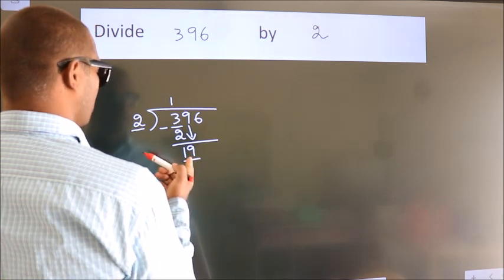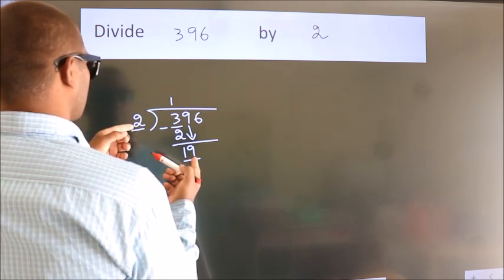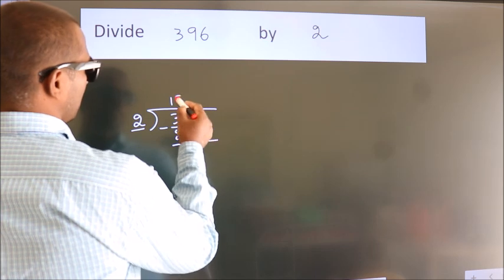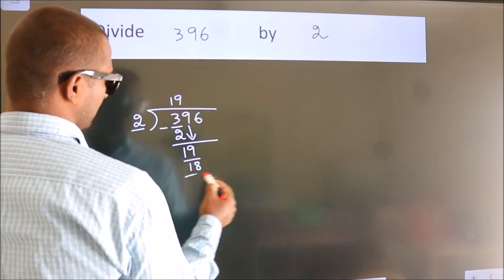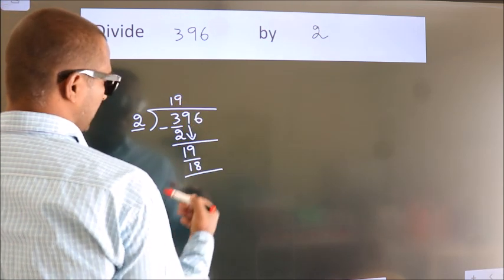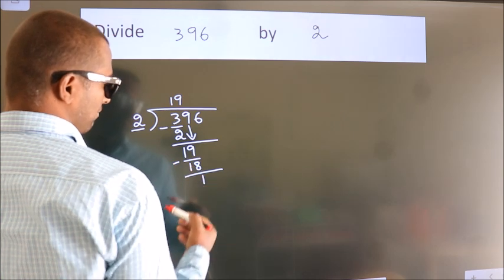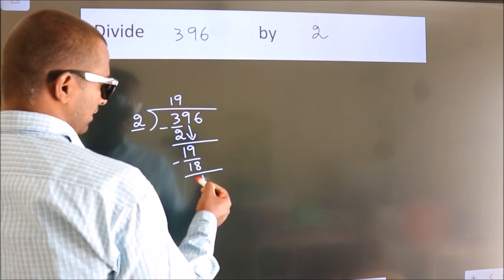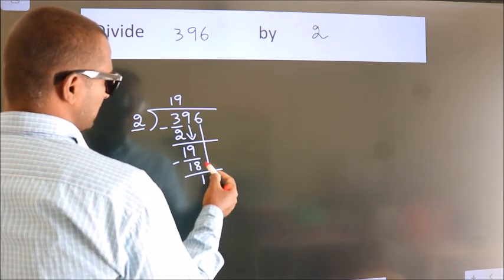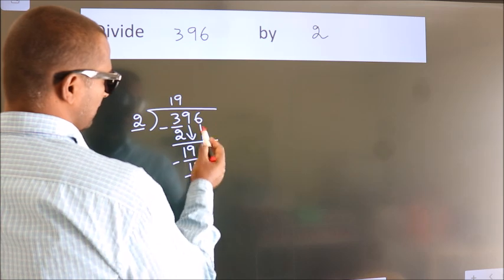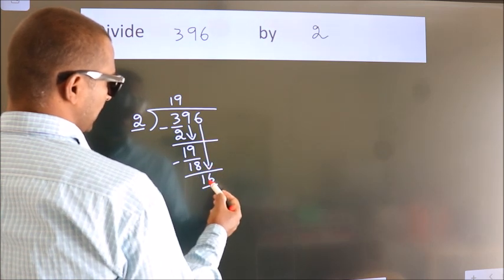A number close to 19 in the 2 times table is 2 nines — 18. Now we subtract; we get 1. After this, bring down the beside number. So 6 comes down, giving us 16.